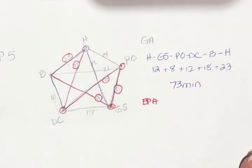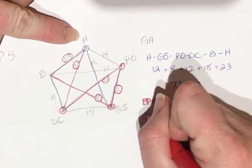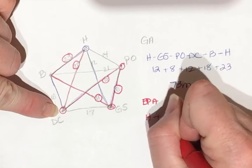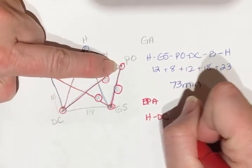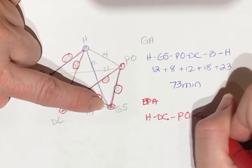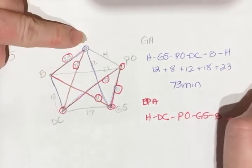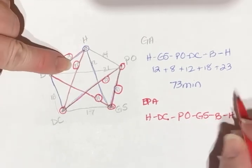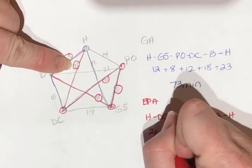So my route starting from home, I'm going to have home, dry cleaner, post office, grocery store, bank, and then back home. One, two, three, four, five, six.